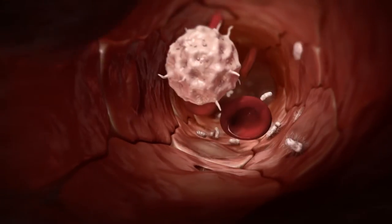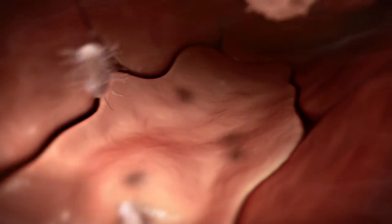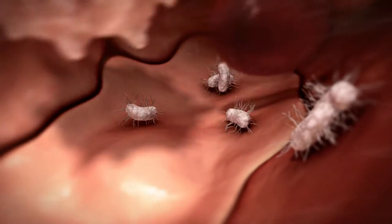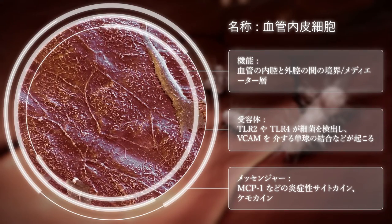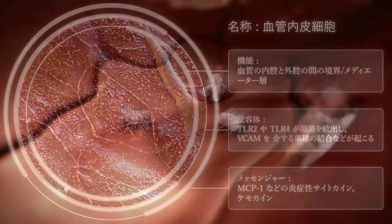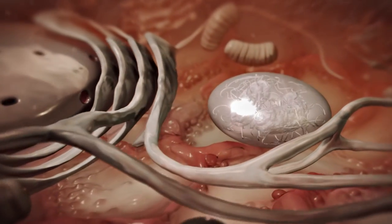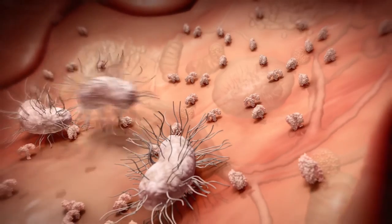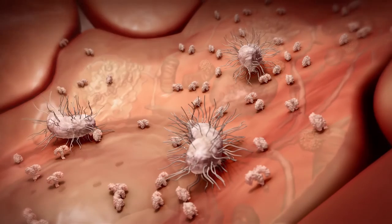血管を裏打ちしている内皮細胞へ侵入する細菌がいます。細胞内に侵入し、免疫系を逃れたこれらの細菌はそこで増殖し、血管壁を構成する他の内皮細胞に感染します。内皮細胞は細菌を認識し、炎症を促進する物質を産生します。